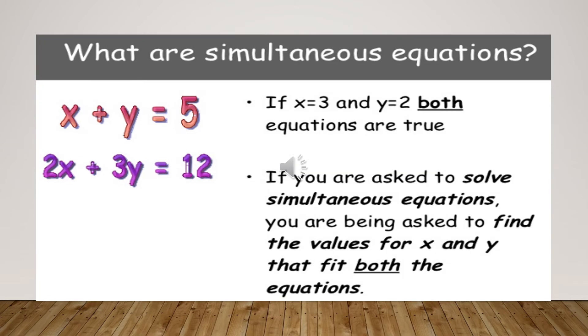If x is equal to 3 and y is equal to 2, then both of the equations are true. It means that if I am putting the value of x, 3, and y, 2, in equation 1, so I will get 5. It means that left hand side will be equal to the right hand side. The same value I am going to put in equation 2, means 2 multiplied by x, means 2 times 3 is 6. And 3 multiplied by y, means 3 times 2 is 6, means 6 plus 6 equals to 12. It means if you are asked to solve the simultaneous equation, you are being asked to find out the value of x and y that fit in both of the equations.